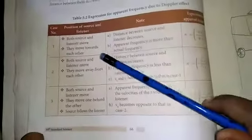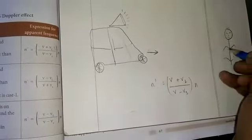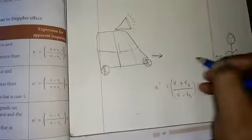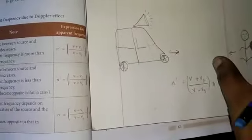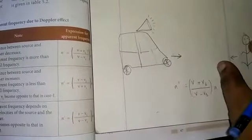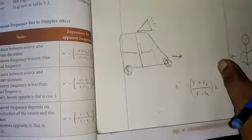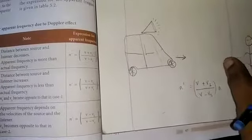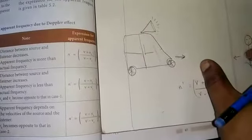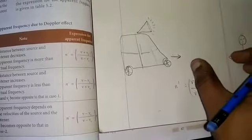It is a source, it is a listener — both are moving. One more condition given: they move towards each other. When they move towards each other, this condition means the distance decreases.